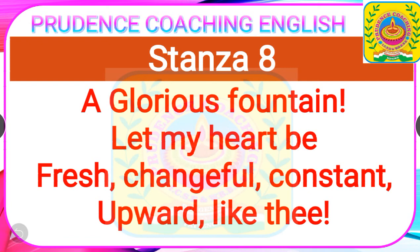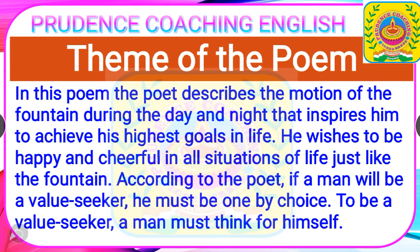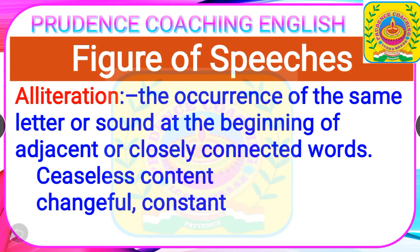We have finished the explanation of all eight stanzas. Now the theme of the poem: the poet describes the motion of the fountain during day and night, which inspires him to achieve his highest goals in life. He wishes to be happy and cheerful in all situations, just like the fountain. According to the poet, if a man will be a value seeker, he must win by choice and think of himself. Now we will discuss the figures of speech used in this poem.